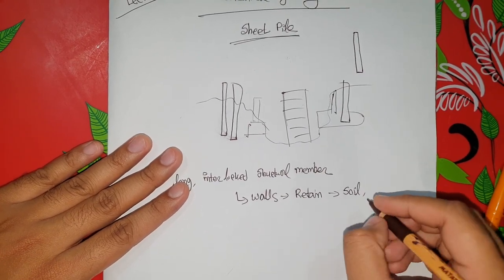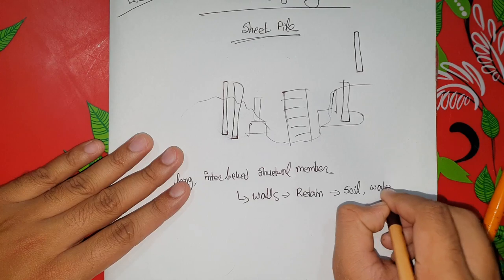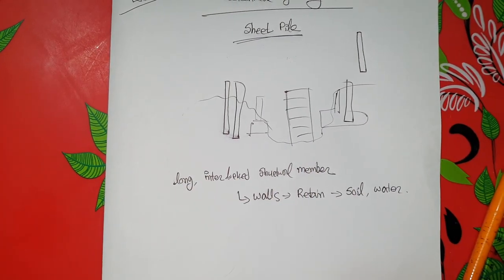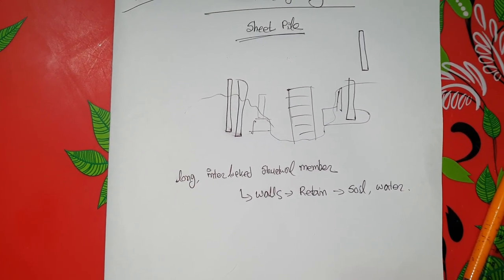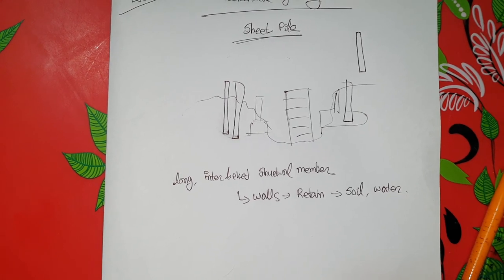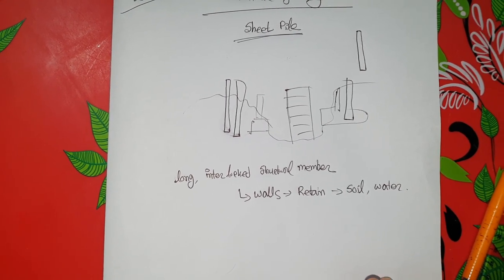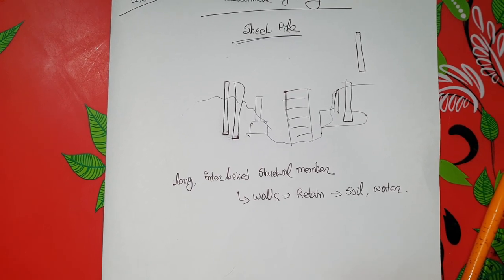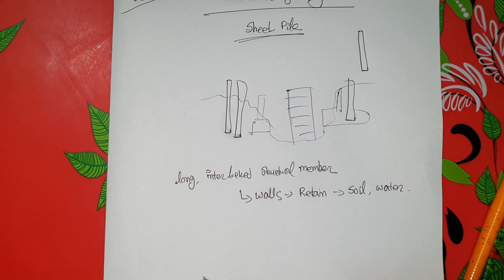The interlock structure retains soil, pressure, water, pressure, and other materials. The interlock structure retains soil, water, etc. It is typically made of steel or other material. The material is driven and pushed into the ground.